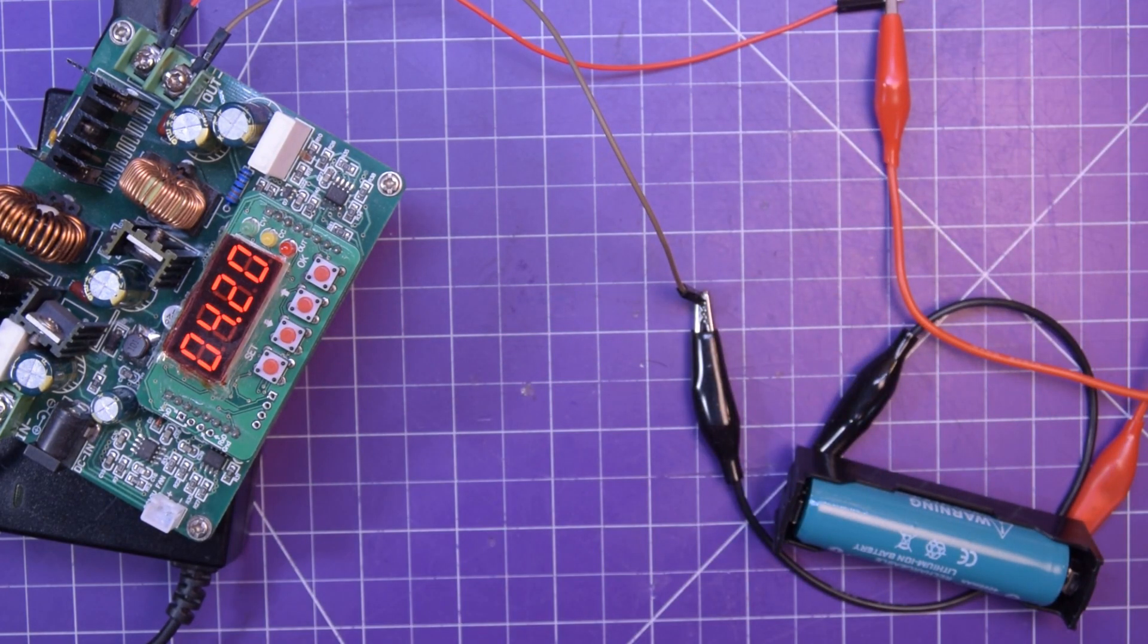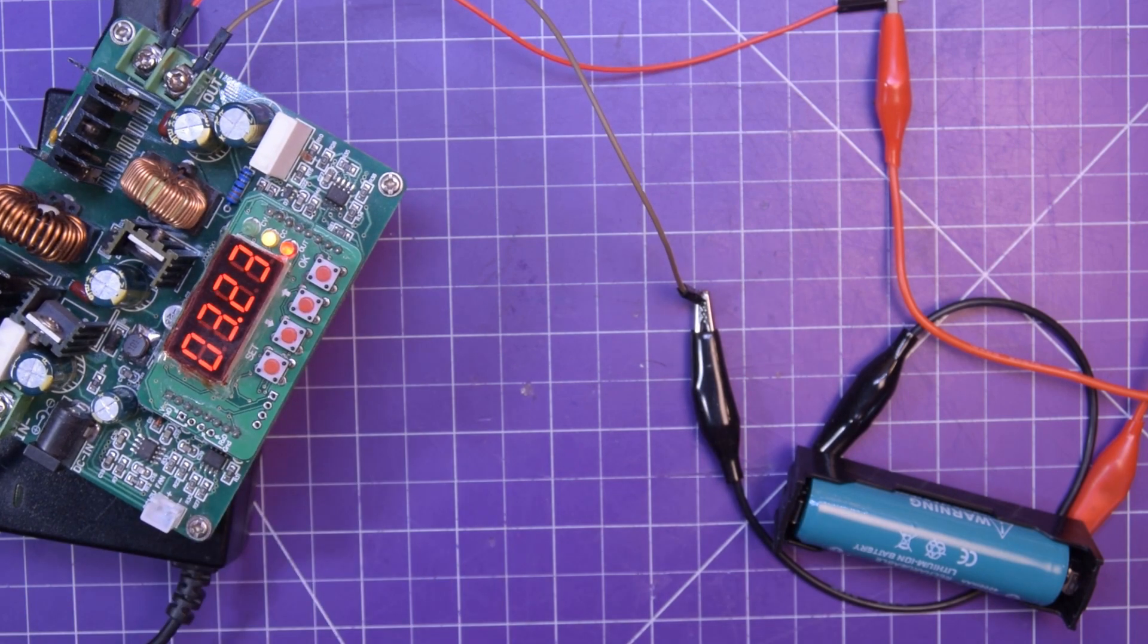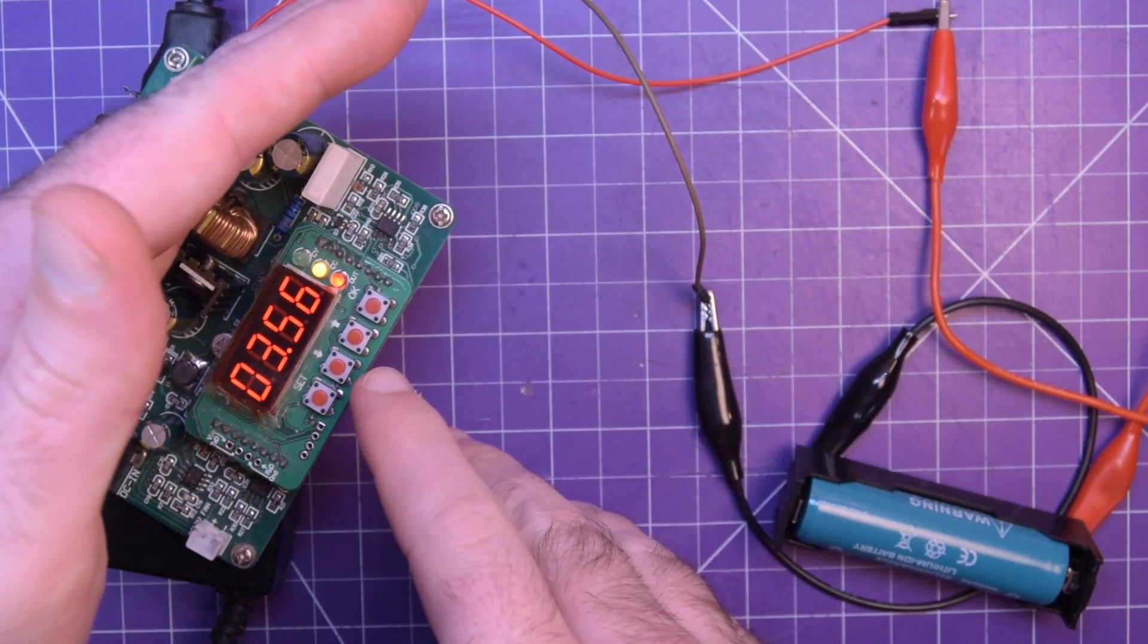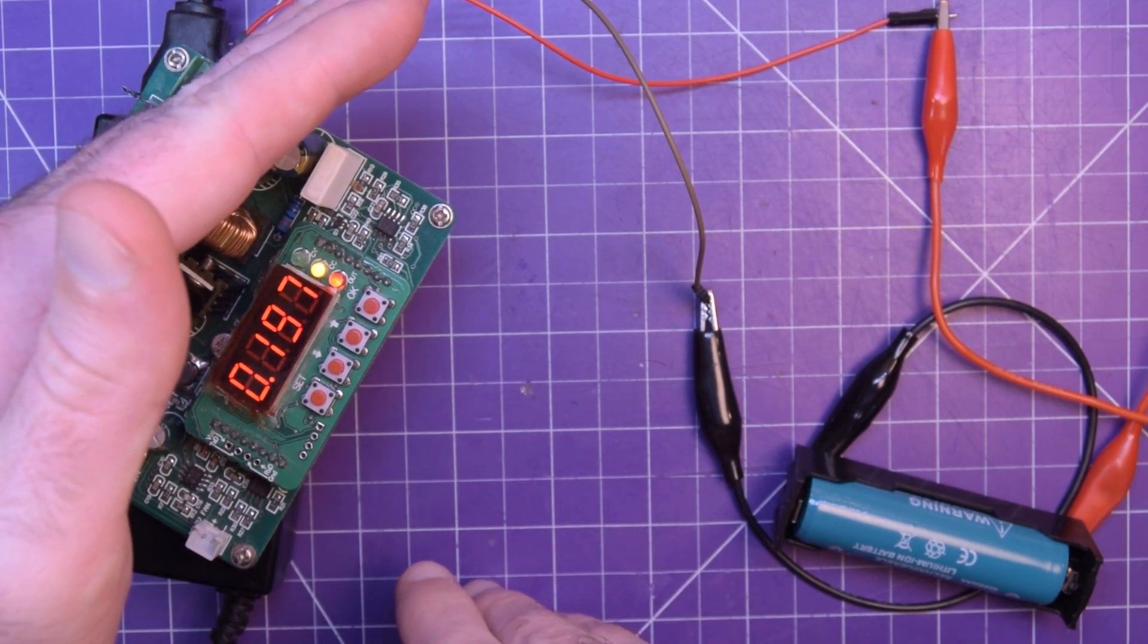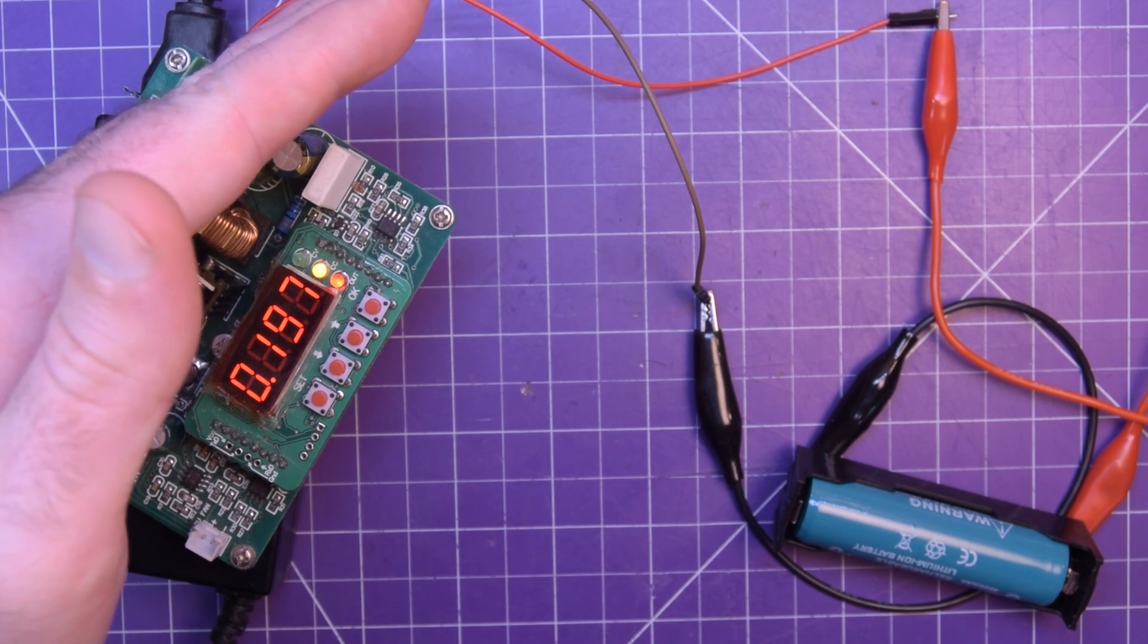So like so. And let's go. Oh, so it is flowing current. Look at that, 3.7. And we got 200 milliamps.